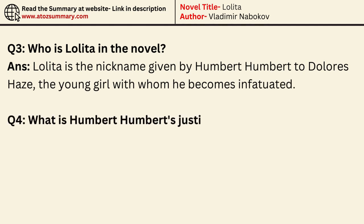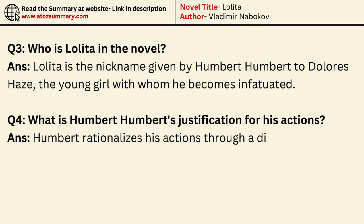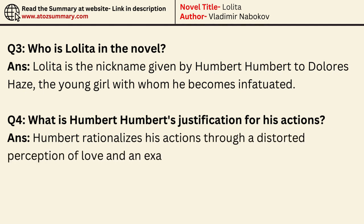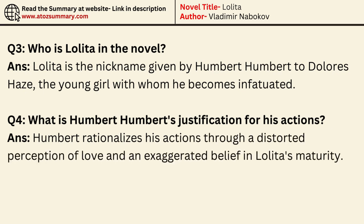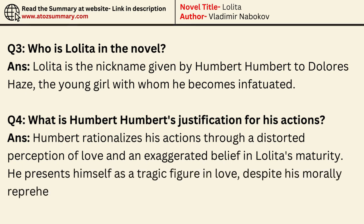What is Humbert Humbert's justification for his actions? Humbert rationalizes his actions through a distorted perception of love and an exaggerated belief in Lolita's maturity. He presents himself as a tragic figure in love, despite his morally reprehensible behavior.